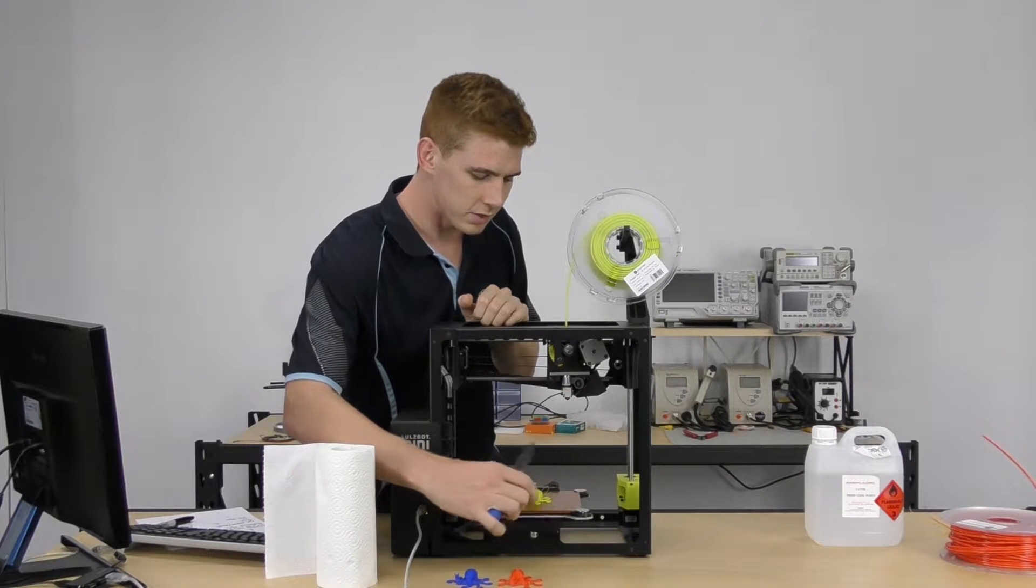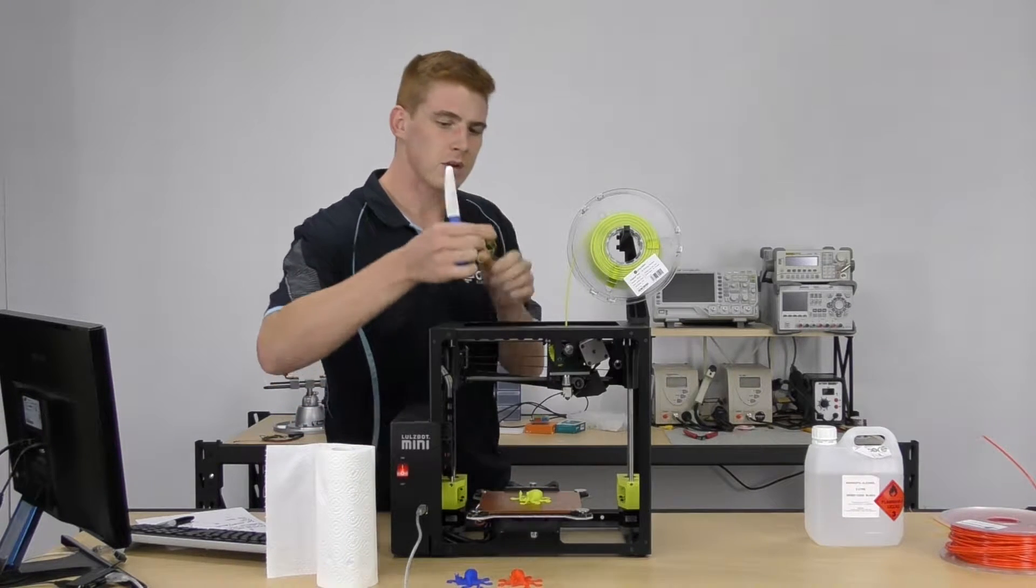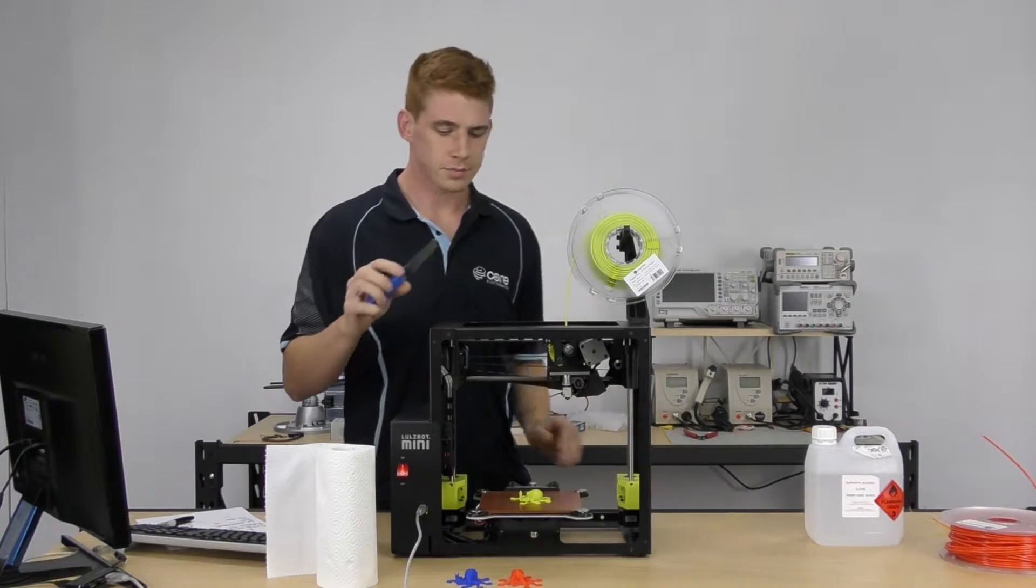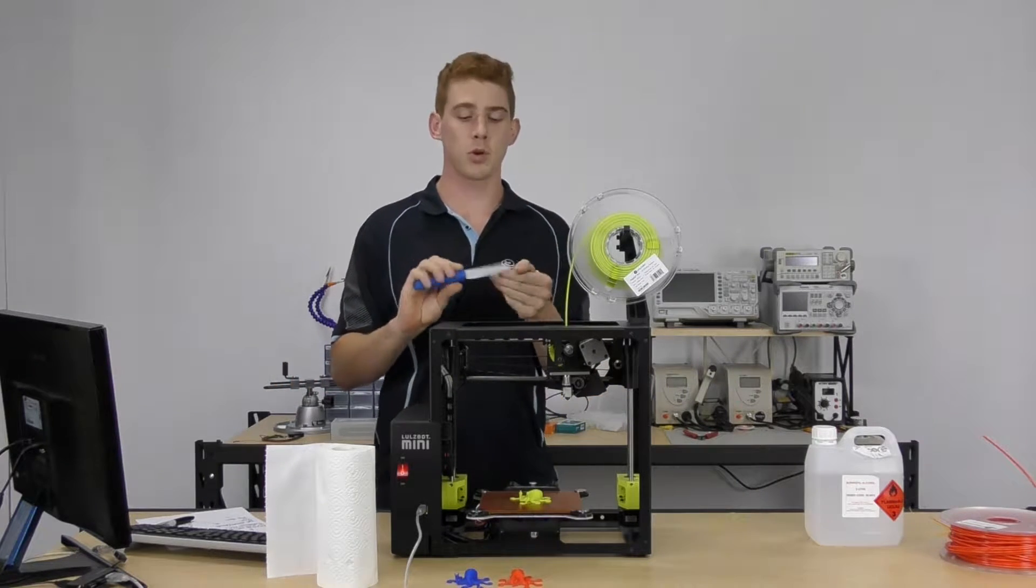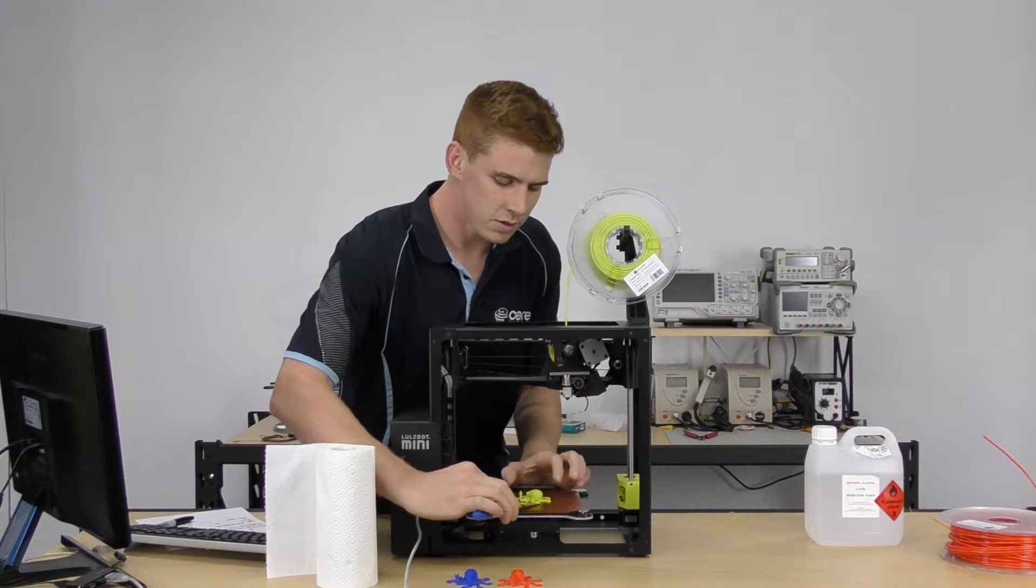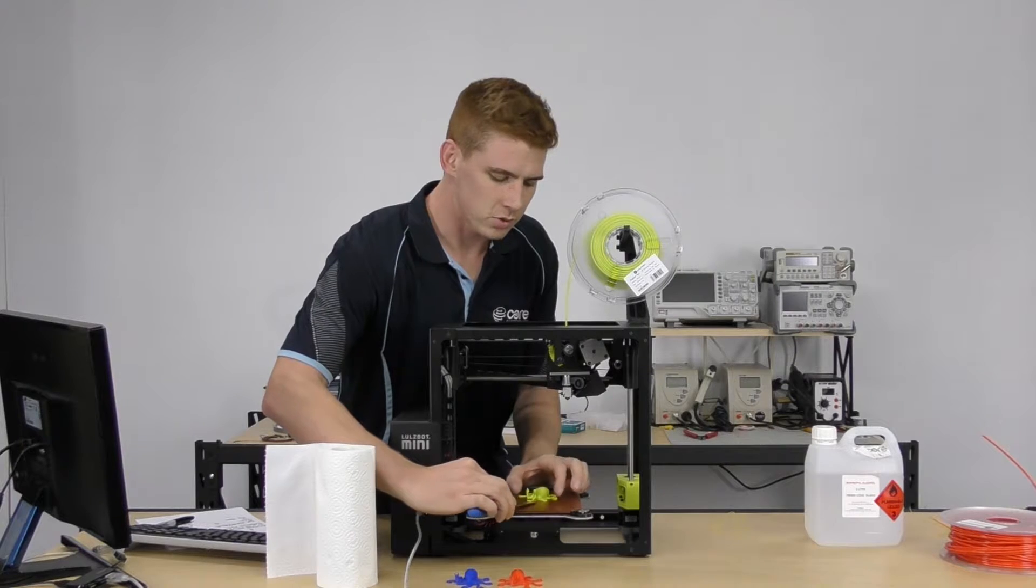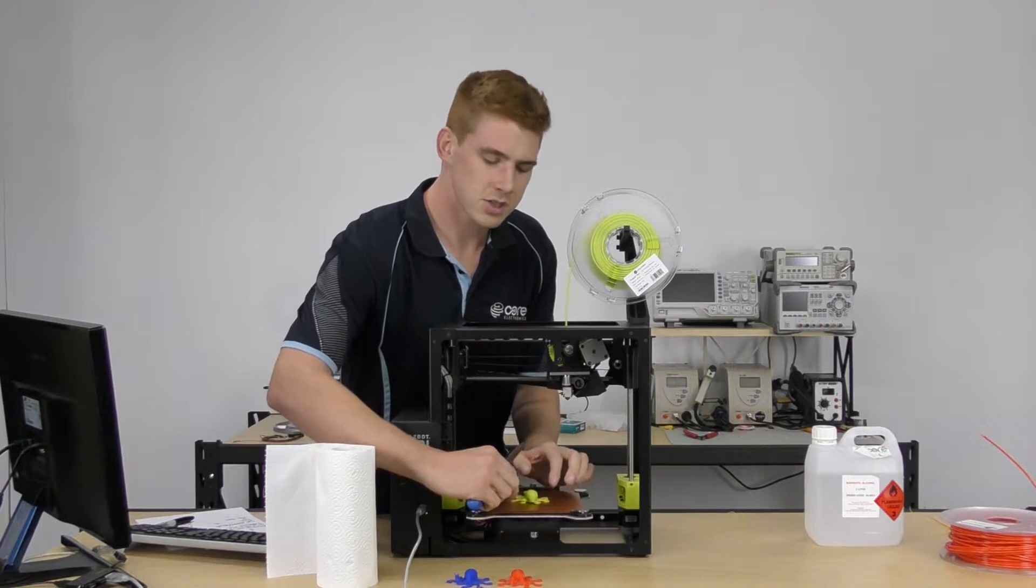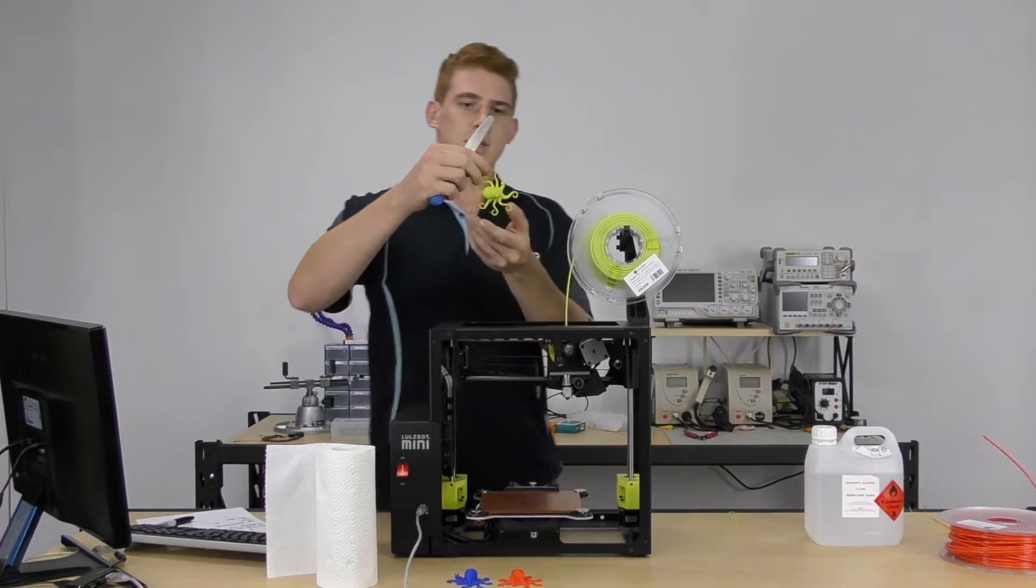We can see there's a bit of a skirt around the outside, so I might flip that off. It's as easy as just getting a knife under there and lifting it up. That's pulled that off nice and easy. Now to get the rest of our print off, we're going to get our knife underneath each leg individually and just slide it in until it pops off the bed.